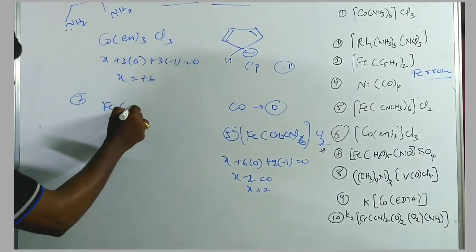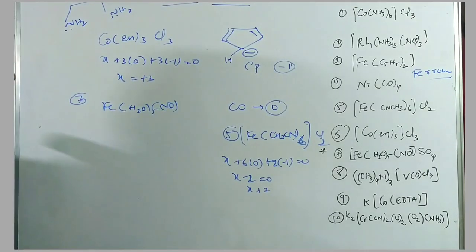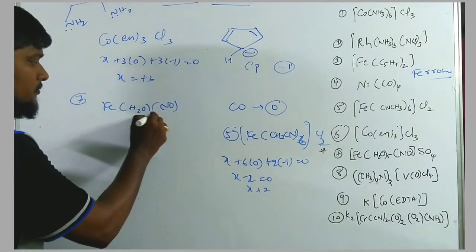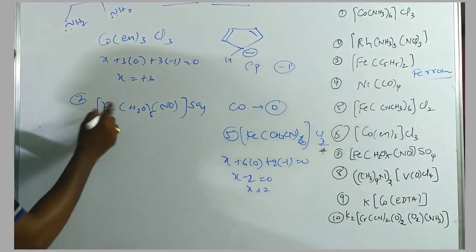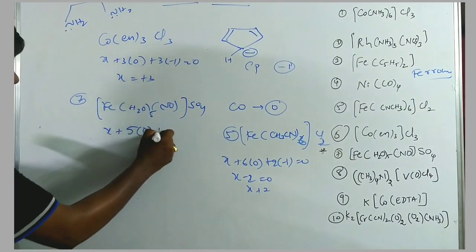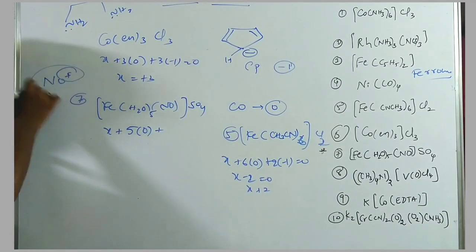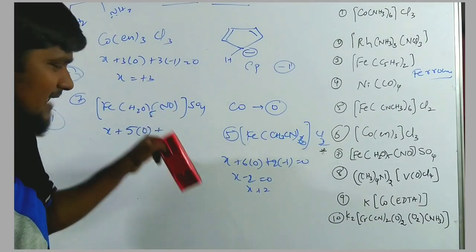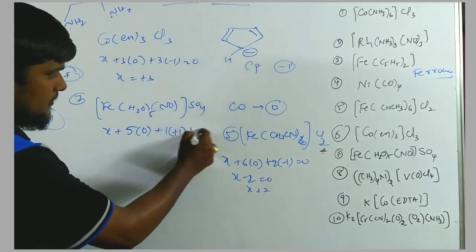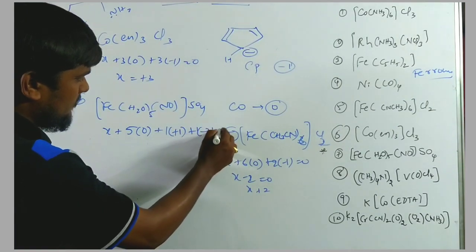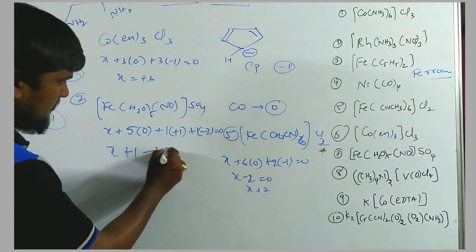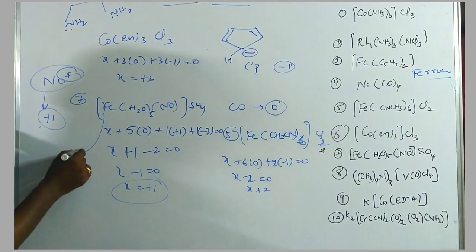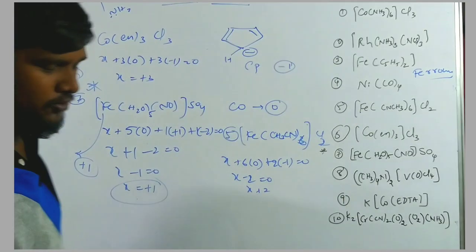Seventh example: [Fe(H₂O)₅(NO)]SO₄ — the blue ring test compound. H₂O is neutral: X + 5(0) + 1(+1) + 1(−2) = 0. NO acts as a nitrosonium cation with charge +1. So: X + 1 − 2 = 0, giving X = +1. Iron's oxidation state is +1 in this blue ring test compound.